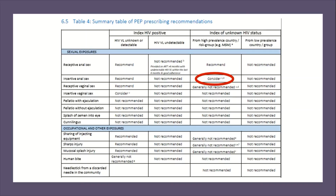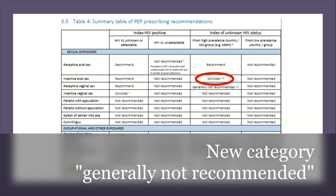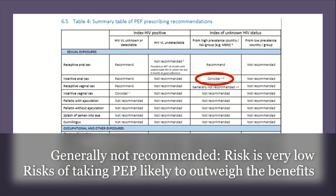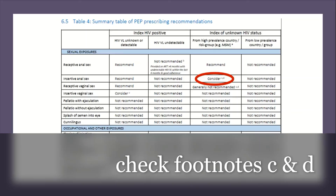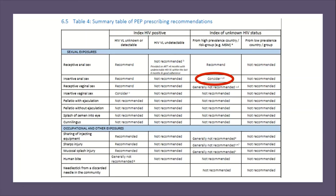The latest BASH PEP 2021 guidance has introduced a new category called 'generally not recommended' — in the previous 2015 guidance this said 'consider'. The definition of 'generally not recommended' is when the risk of HIV transmission is very low and the potential toxicity and inconvenience of taking PEP every day for 28 days and attending all appointments and blood tests for follow-up is likely to outweigh the benefit, unless there is a clear specific extenuating factor increasing the risk. You should look at footnotes C and D to help decide whether to offer PEP. BASH guidance states that PEP should very rarely be given in cases assessed as 'generally not recommended'.